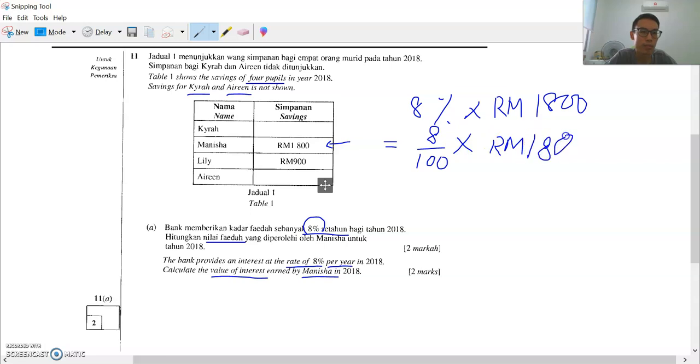Next, you cross the zero. The left side you cross two zeros, right side you also cross two zeros. It must be the same. So 8 times 18 ringgit, you get 144.